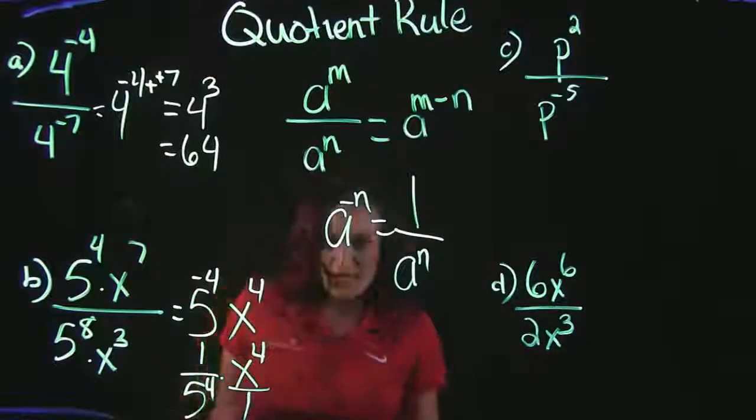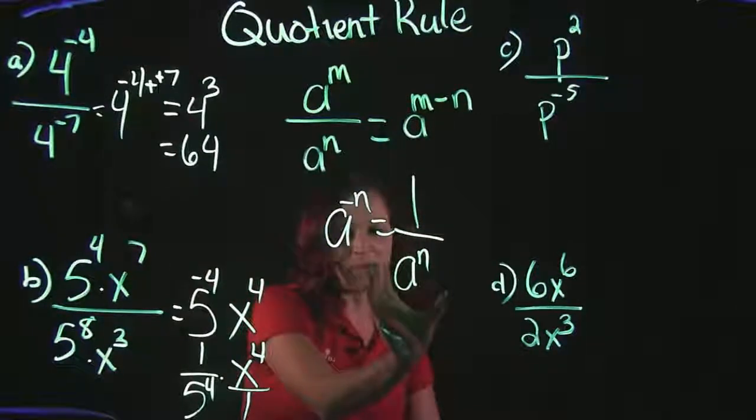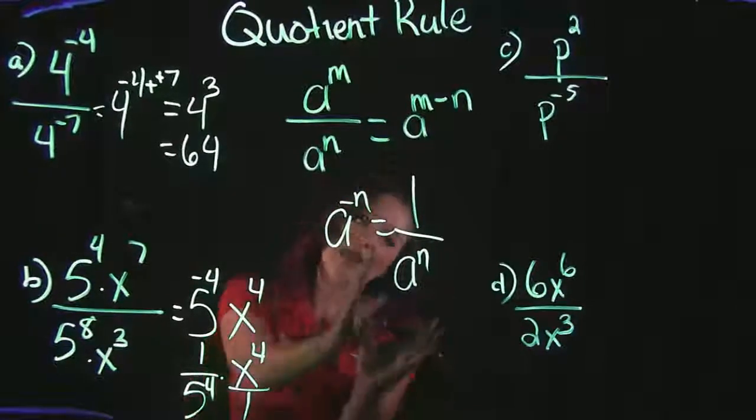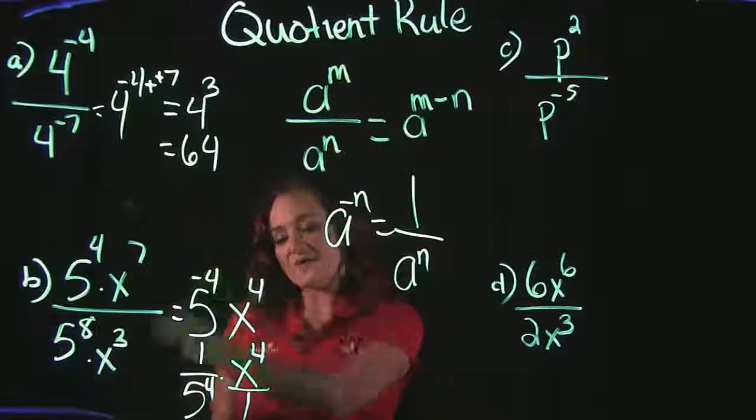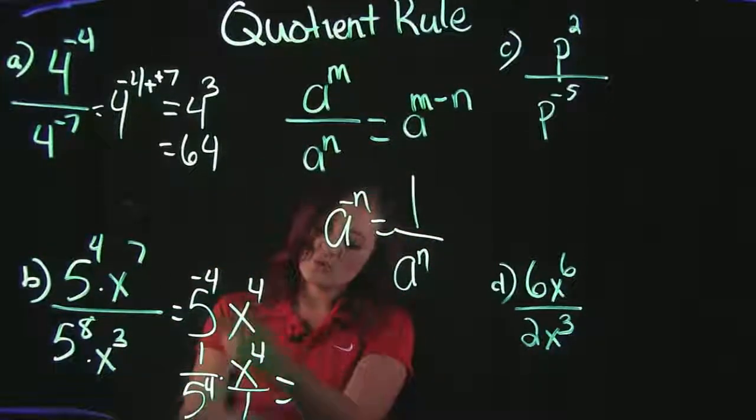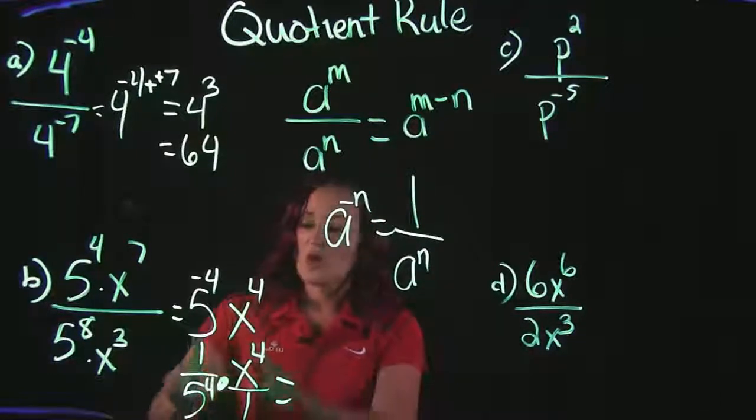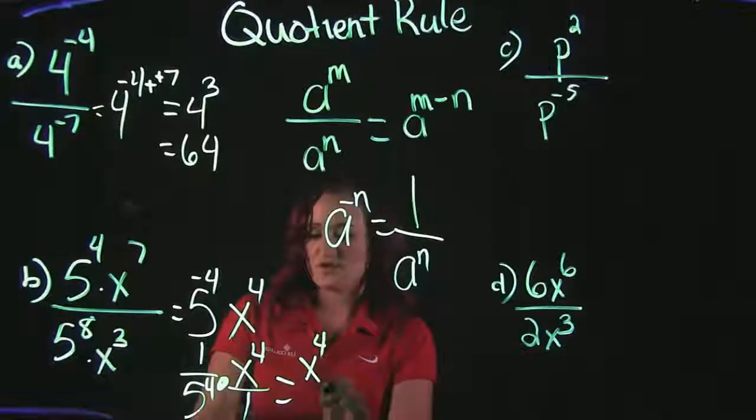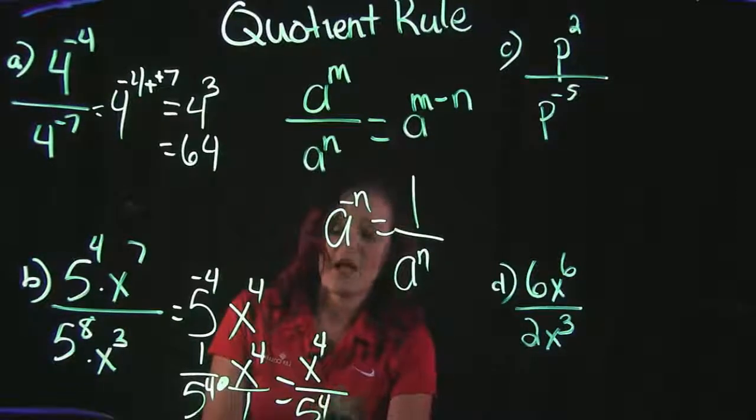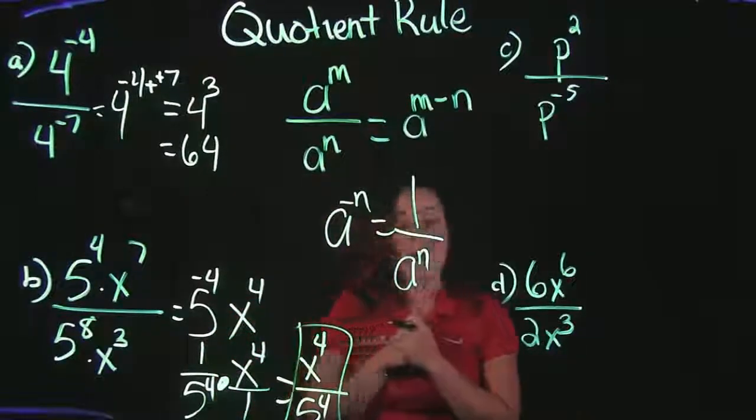Now this x would still stay put. It would be up in the numerator the same place that it was at. The only thing we're taking is we're taking that 5 to the negative 4 and we're shifting it down. The way I like to look at negative exponents is that if you had a negative exponent in the numerator, you're bringing it down to the denominator and making it positive. Or had it been in the denominator, you're going to be moving it up. So this 5 is going to be shifted down. So cleaning this up a little bit, 1 times x to the 4th is x to the 4th, and 5 to the 4th times 1 is 5 to the 4th.